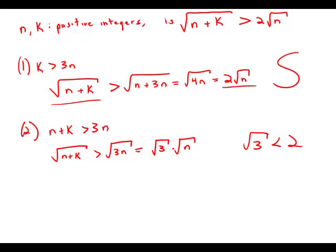Knowing that n plus k is greater than the square root of 3 times n doesn't answer the question, is it greater than 2 times the square root of n? This opens up an ambiguity, and because of that ambiguity, this statement is insufficient.